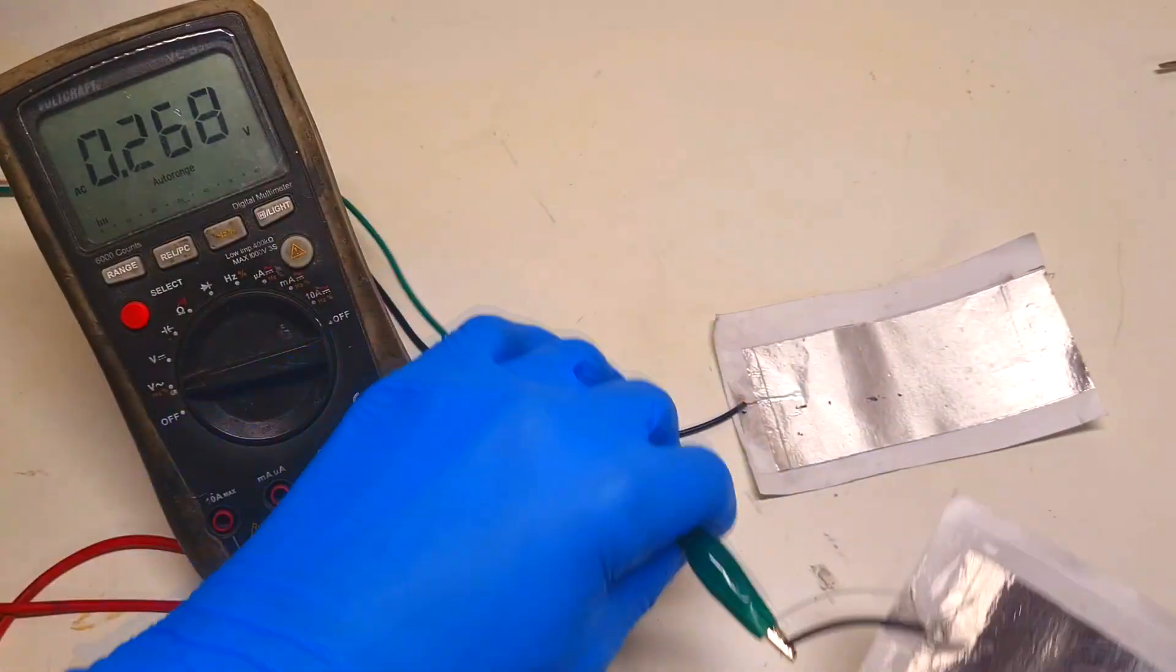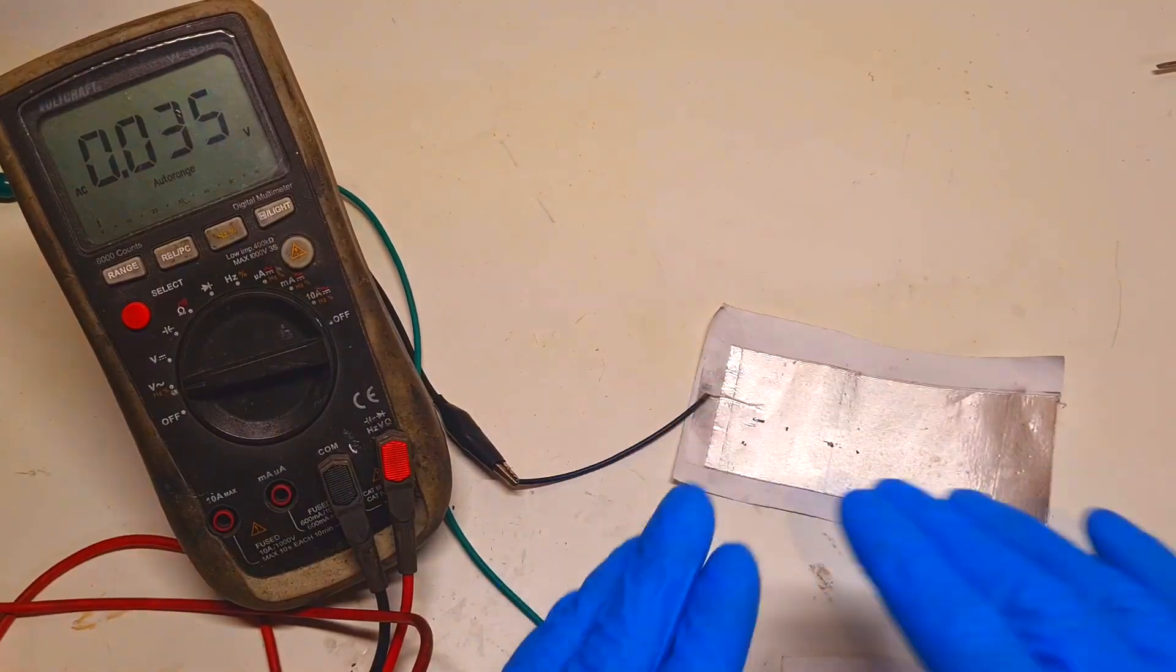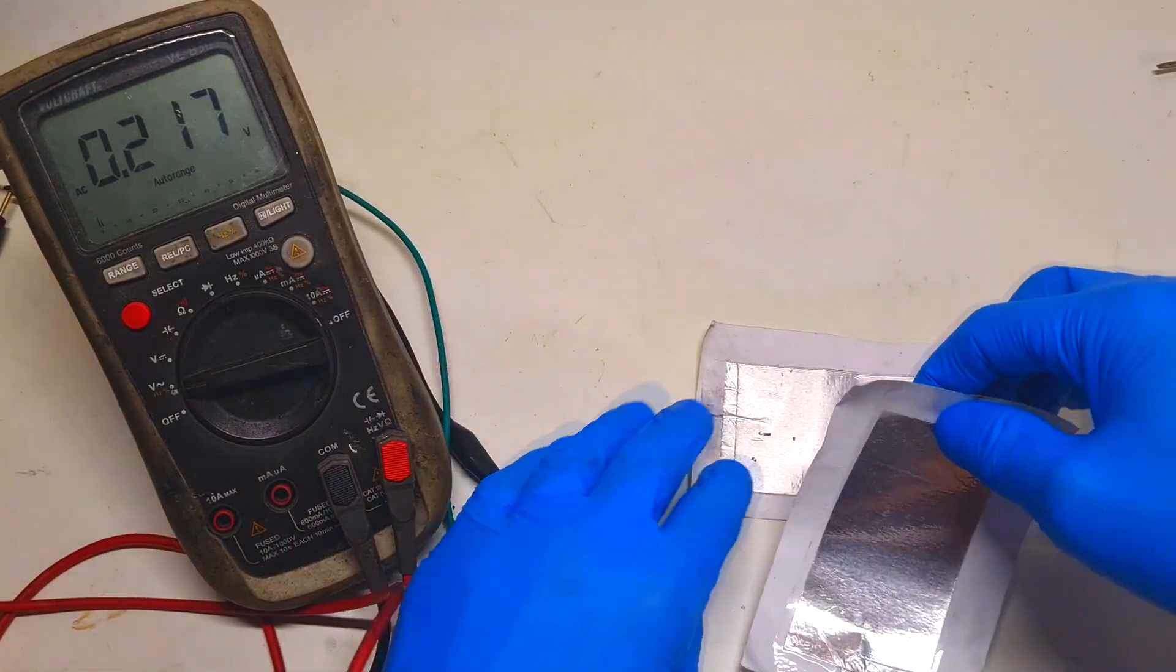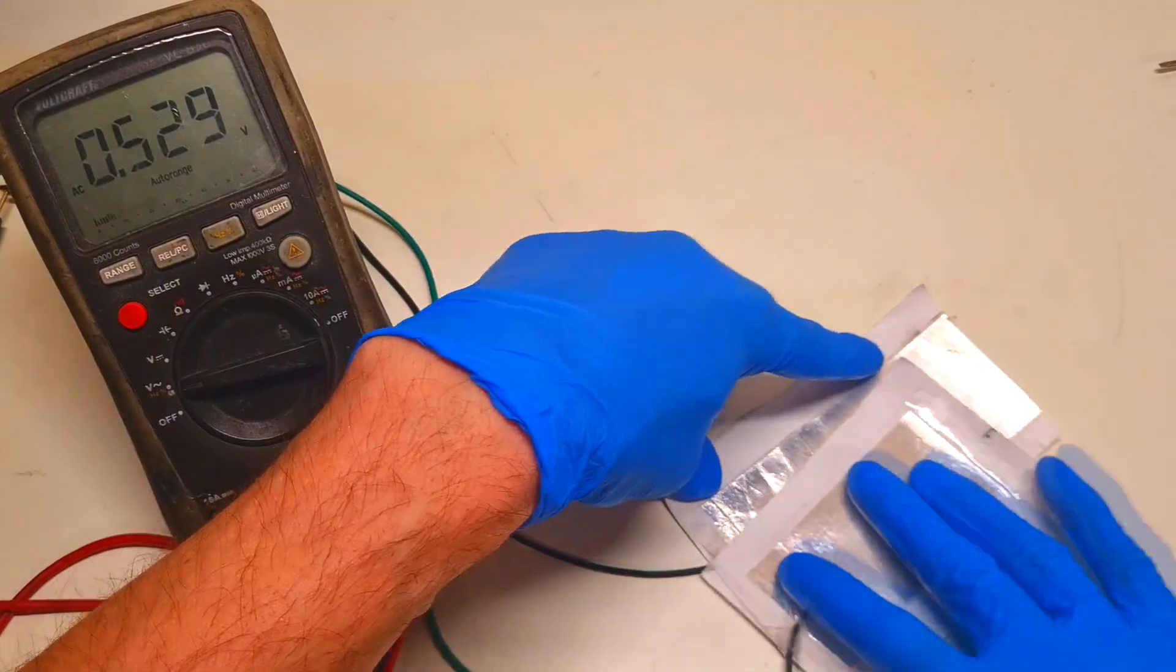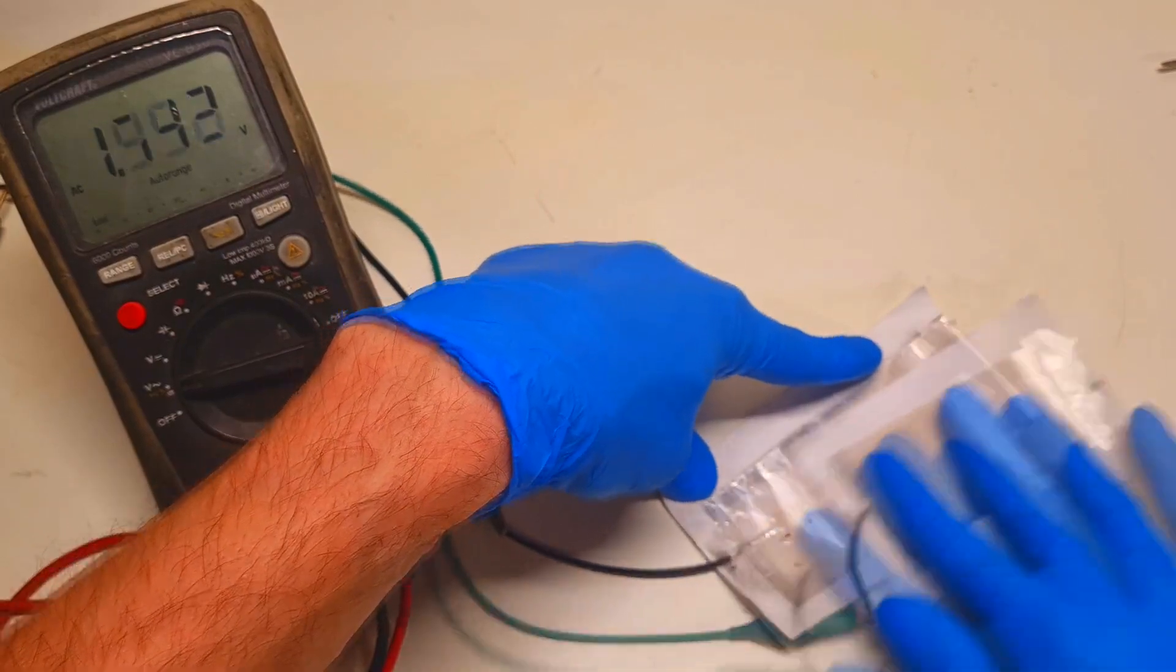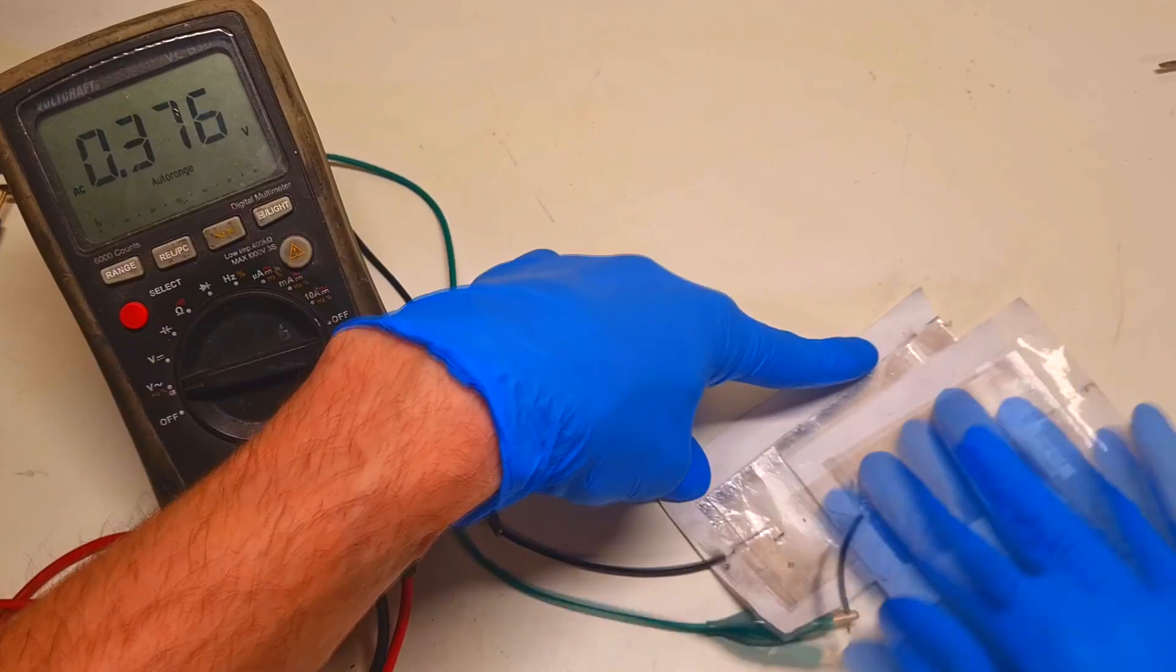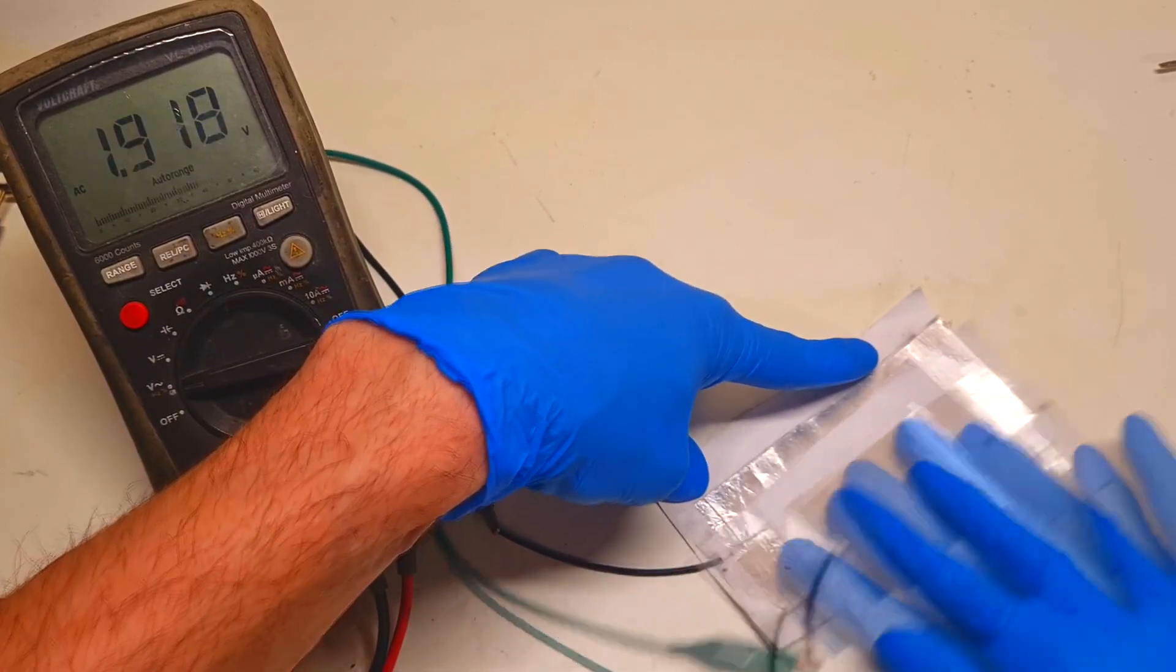If I want to make a triboelectric generator with the contact sliding mode, which means that the top electrode will slide or rub the bottom electrode, with this one I get the voltage of 1 to 2, almost 3 volts.